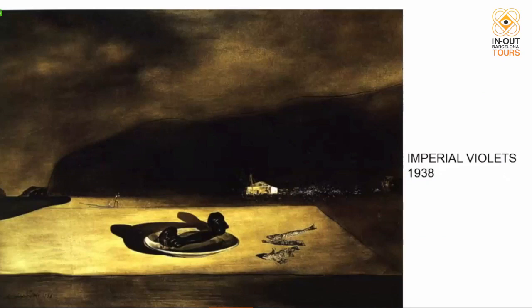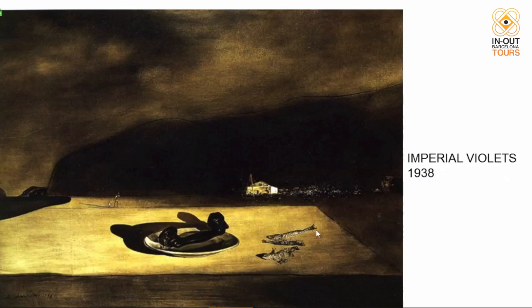In 1938 we have 'The Imperial Violets' — a very important painting in the museum. It's very different from what we're used to from Dalí, because it's not colorful at all. It's a very dark painting with cloudy skies and a lonely beach with three dead sardines representing death. This is the beach in Port Lligat, in front of his house — death at Port Lligat in 1938, while the Spanish Civil War was taking place.